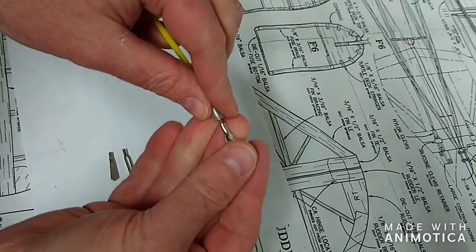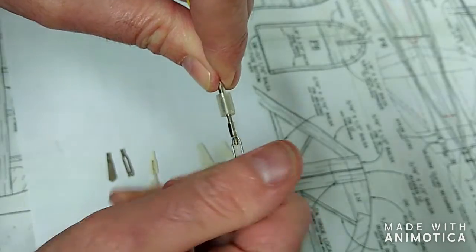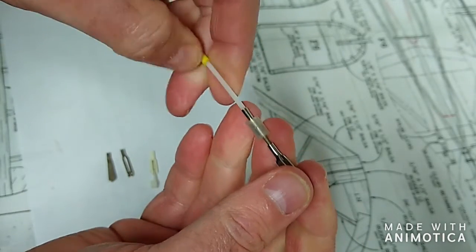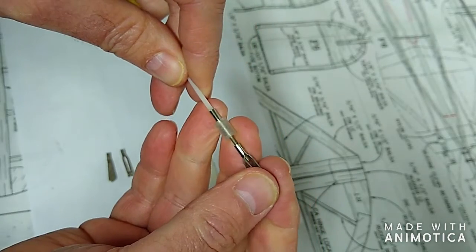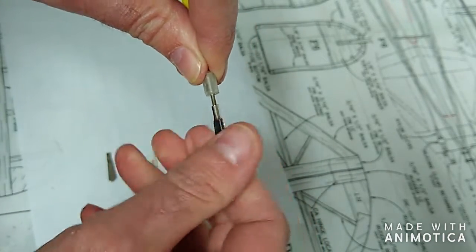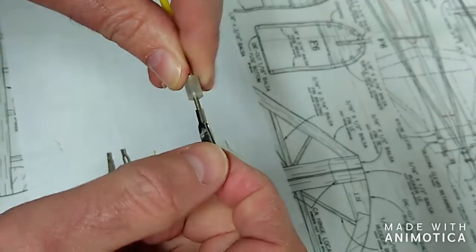So, clevises like this type here can be screwed on, screwed off. There's threaded type. Other clevises must be soldered in place. The benefit of the threaded type is that it allows you to adjust the connection and get the control surfaces in their neutral position.